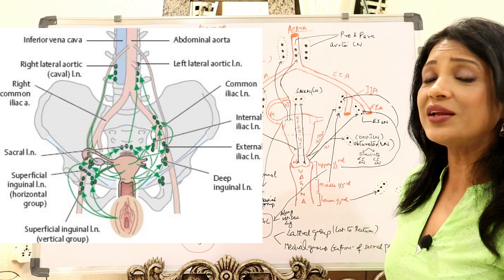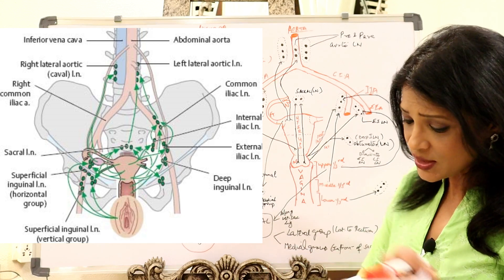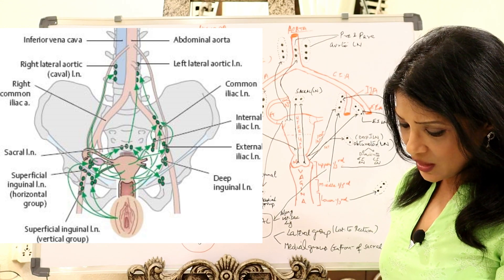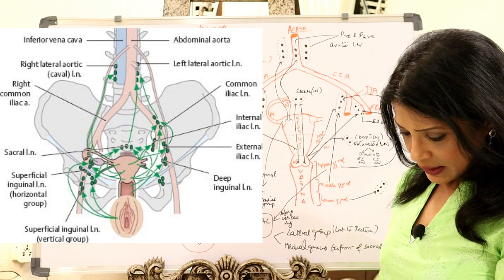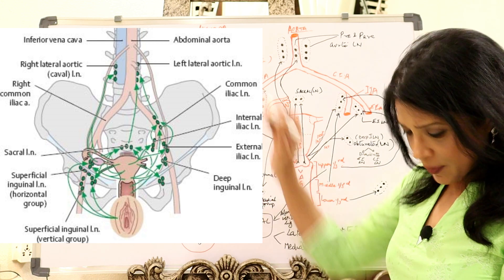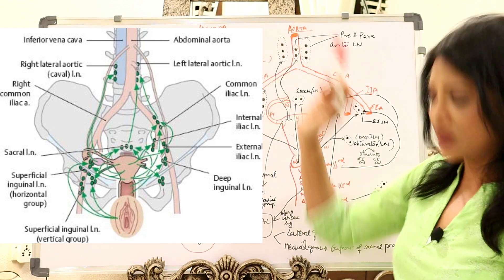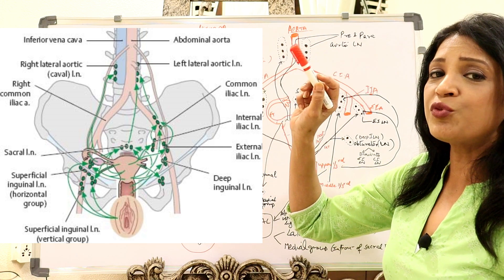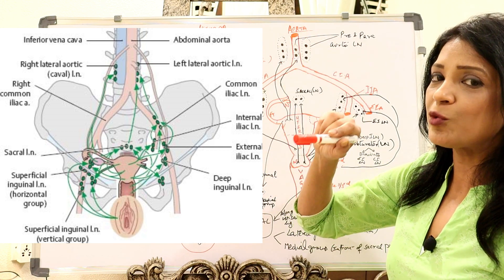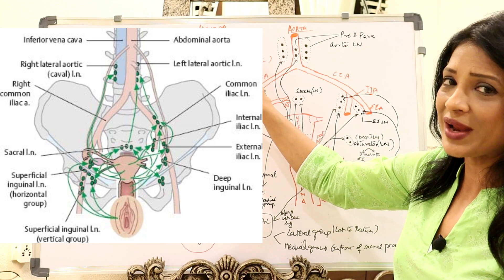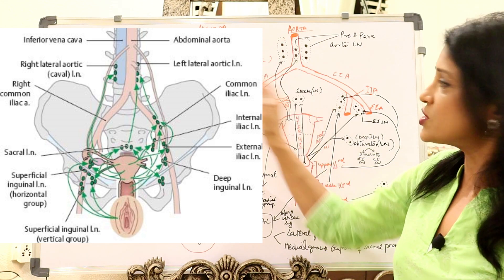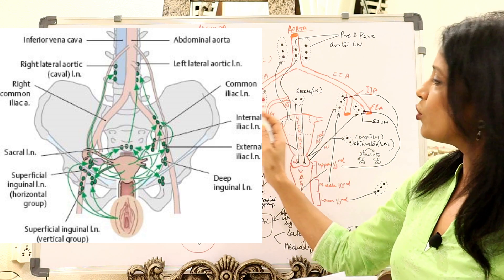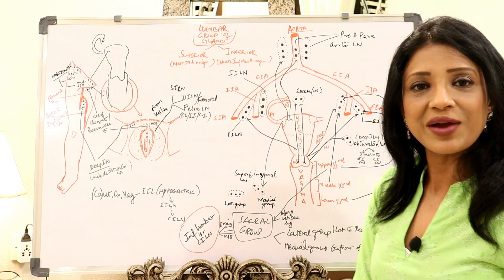The common iliac divides into external iliac and internal iliac at the most important bifurcation. The lumbar group superior group runs along the ovarian artery. Ovarian and fallopian tube lymphatic supply goes into the superior lumbar group of glands, and so cancer of these two structures drains here. The uterus also has some lymphatic drainage to this group because the ovary and uterus are closely associated.